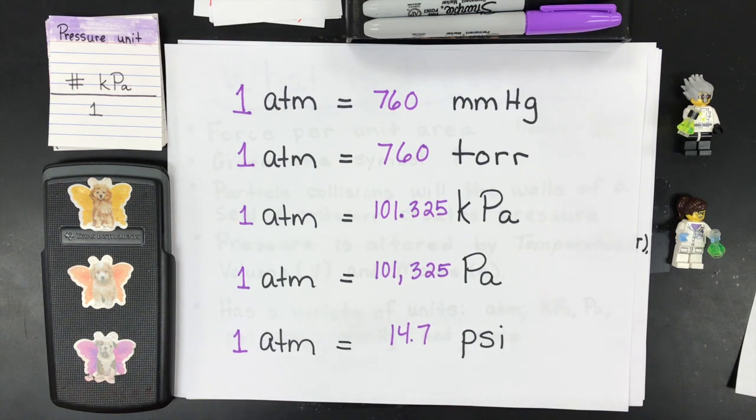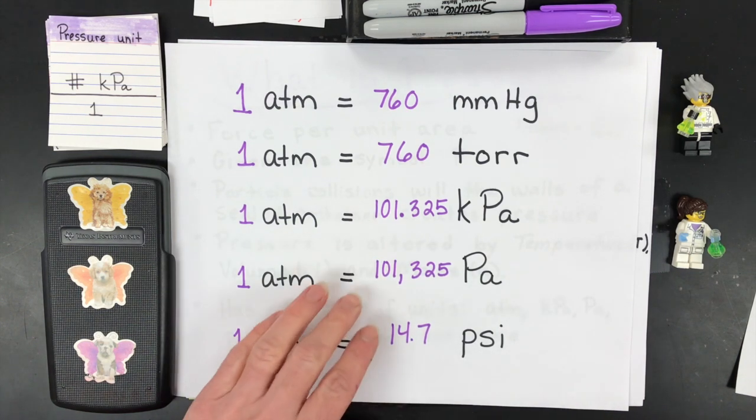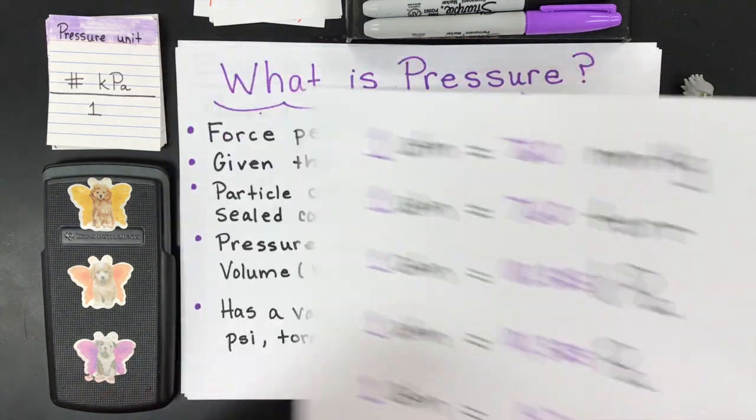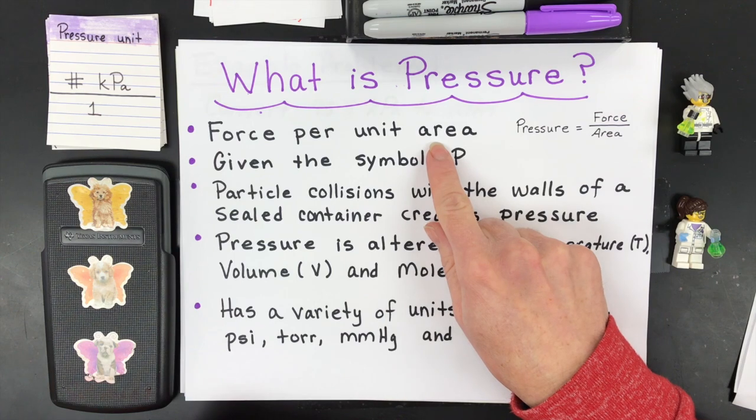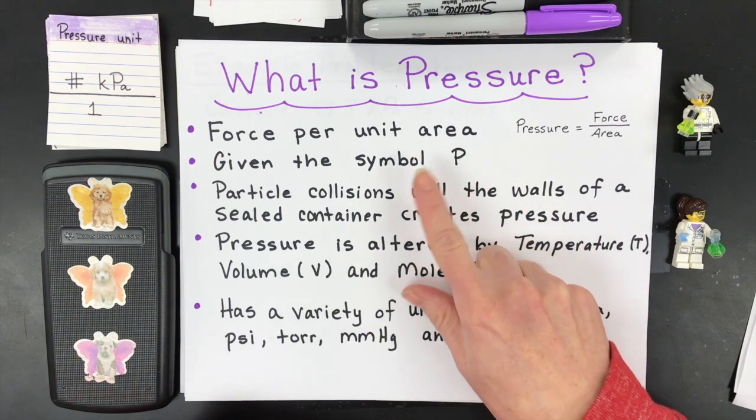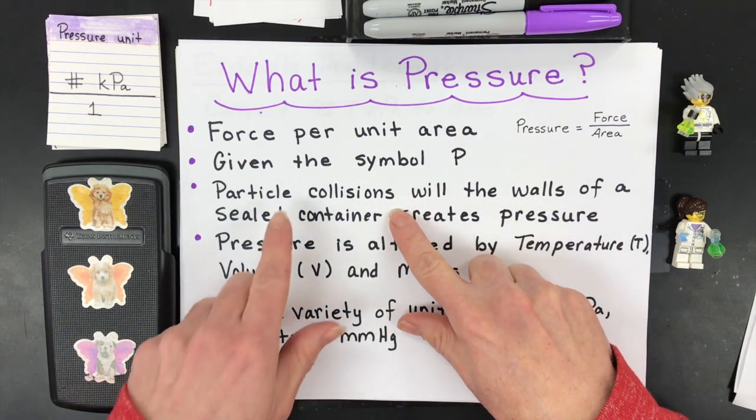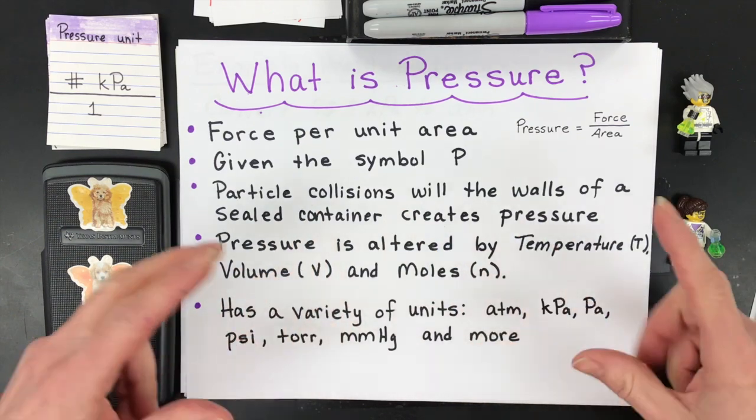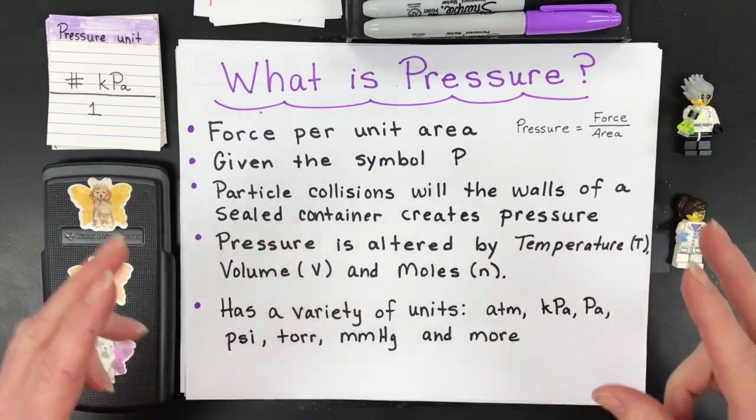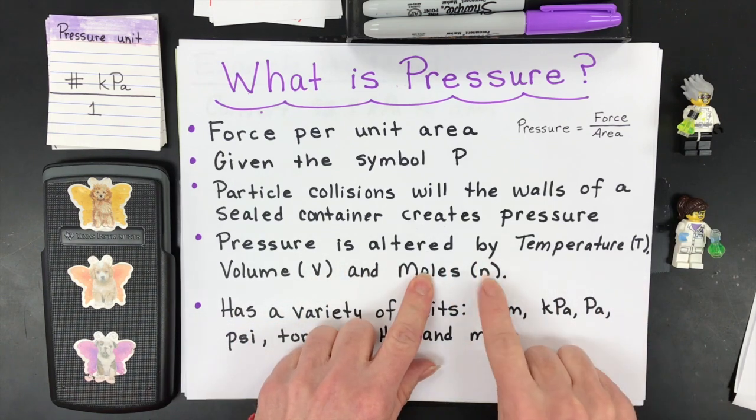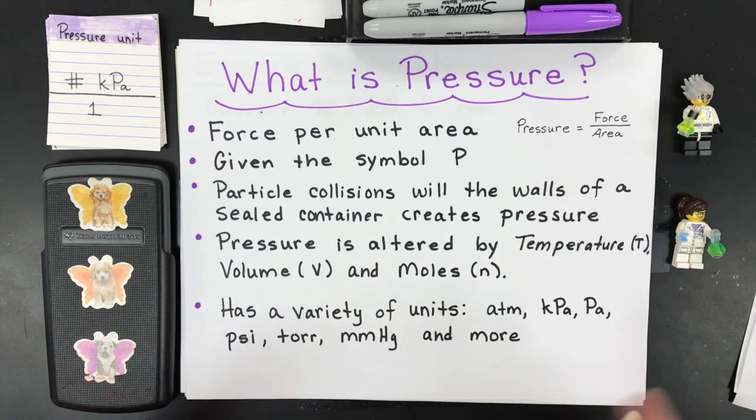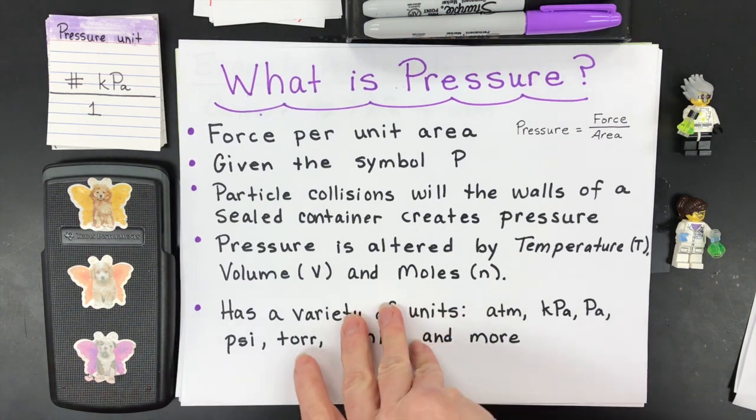Before we do one, let's make sure we understand what pressure is first. It's force per unit area, given the symbol P. It's created in chemistry especially by particles colliding with the walls of a sealed container, usually gas particles. Pressure is altered by temperature, volume, and moles given the symbol n. It's got a variety of units I listed, but there really are others.